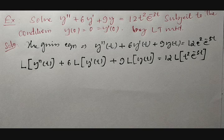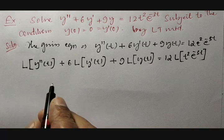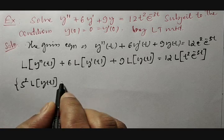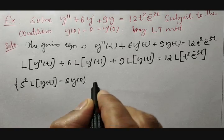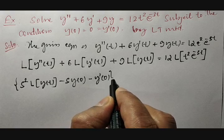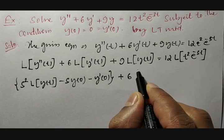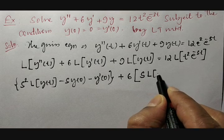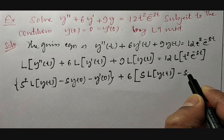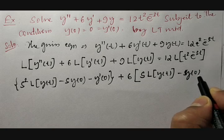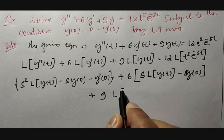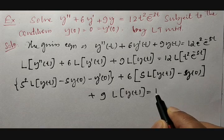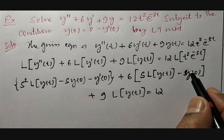Here we can see it is the Laplace transformation of a second order term, so it will start with s². That gives s² · L{y(t)} − s · y(0) − y'(0), plus 6 into [s · L{y(t)} − y(0)], plus 9 · L{y(t)}, which equals 12 · L{t² · e^{-3t}}. This right-hand side is a tricky one.